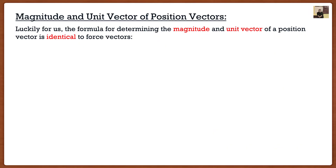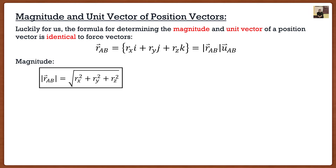Position vectors have the same features as force vectors. Once we have a position vector in Cartesian vector notation, we can find the magnitude and the unit vector using the exact same formulas as with force vectors. To find the magnitude, square each component, add them together, and take the square root. The magnitude of a position vector is the actual distance between those two points — the shortest distance.